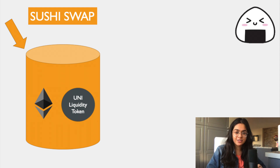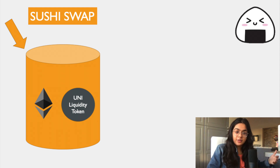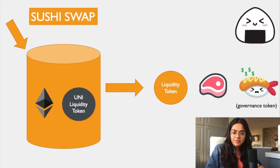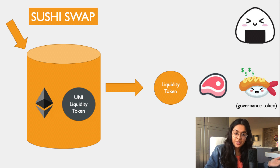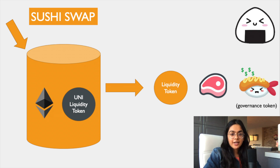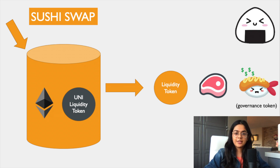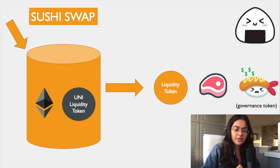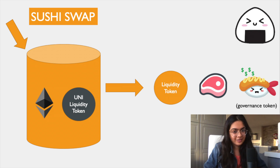SushiSwap did things differently. They actually allowed you to take your Uniswap liquidity provider tokens and put them into a liquidity pool in SushiSwap. On top of that, they would give you Sushi liquidity provider tokens, and you could stake those to earn Sushi. The difference here is that you are earning in Sushi, not in the currency you put in. SushiSwap found a way to get liquidity onto their platform without really having to get new investors in.